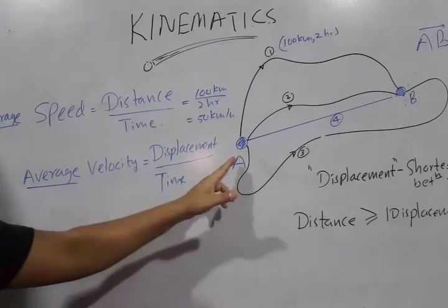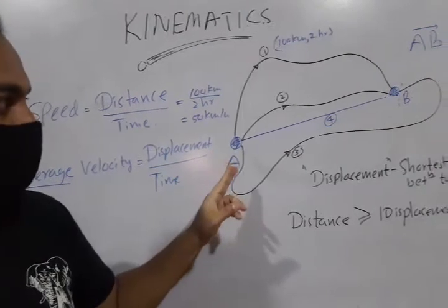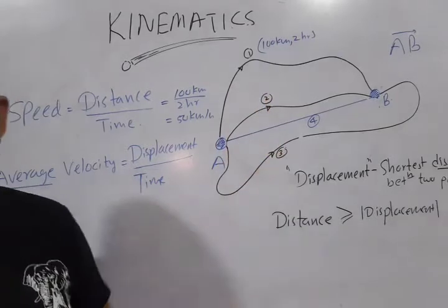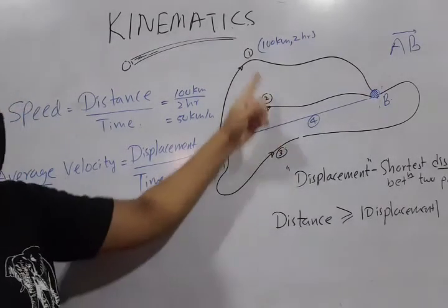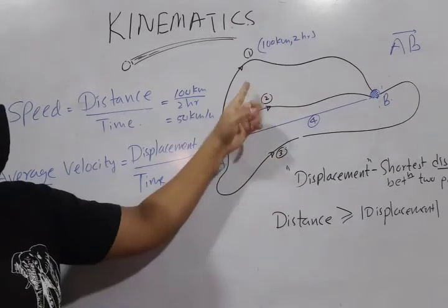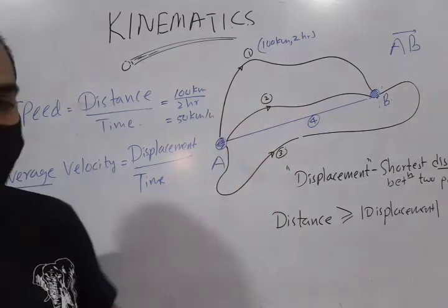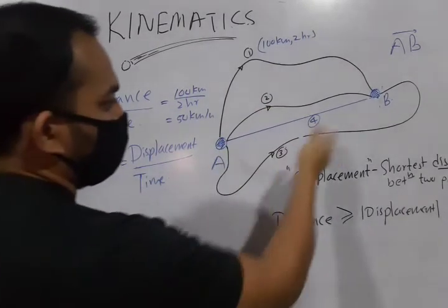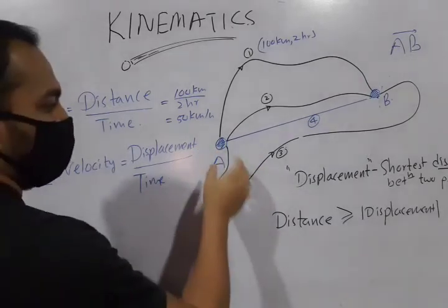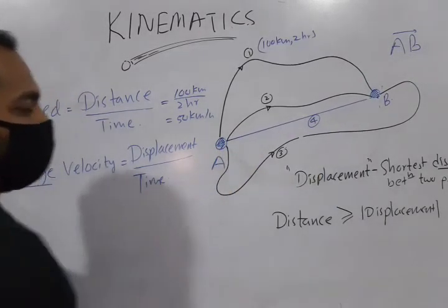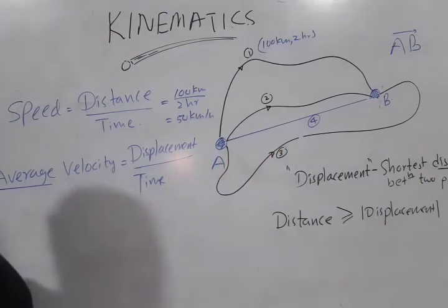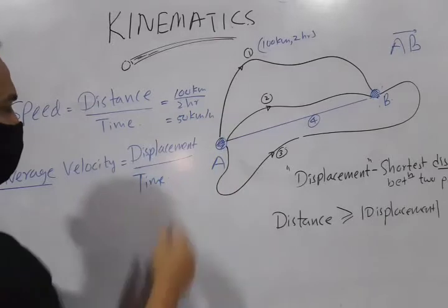And the average velocity is defined as the displacement divided by time. So, you can see here that by looking at this picture, you may notice that speed can be different. Speed can be different because there are three options, which are different in length. So, suppose there are no traffic jam here. So, the time it takes to reach from A to B might be proportional to the distance.